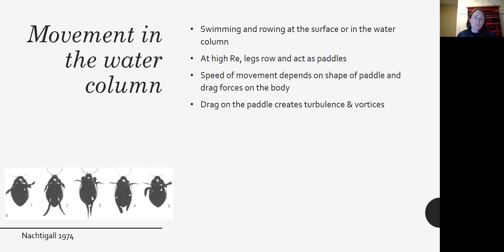Kind of like a paddle when you're rowing a boat. So there is also drag on the paddle that then creates turbulence and vortices after the paddle has moved. So when you're rowing a boat, you can see these kind of vortices move off behind the paddle.